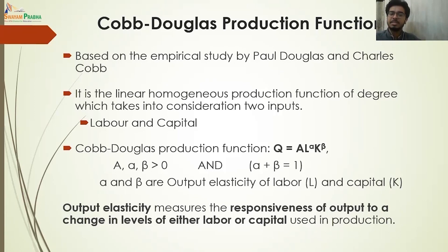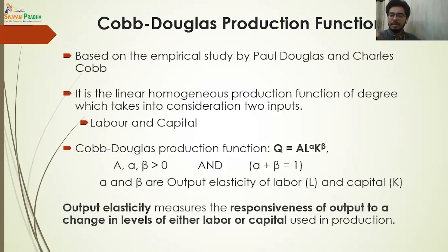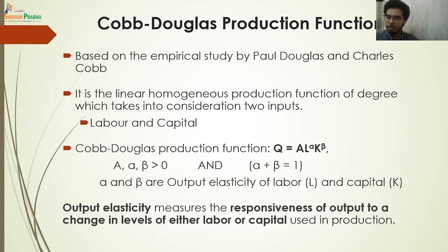Alpha and beta — the output elasticities for labor and capital — in an ideal condition are assumed to equal one together, so alpha plus beta equals one. Therefore the function can be written as Q equals A times L to the power alpha times K to the power 1 minus alpha, because beta equals 1 minus alpha. However, this only holds under certain conditions. What is output elasticity? If you remember price elasticity of demand — how much quantity demanded changes when price rises by one unit — output elasticity is how much total output Q changes with a rise in one unit of labor or capital input.